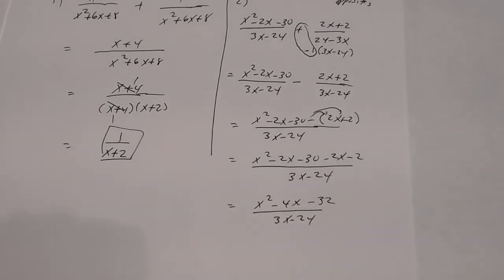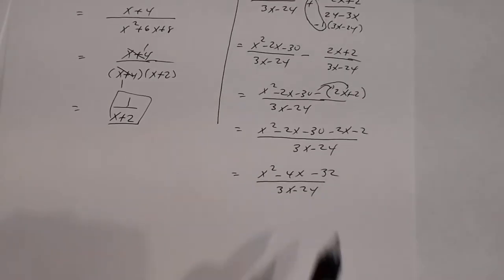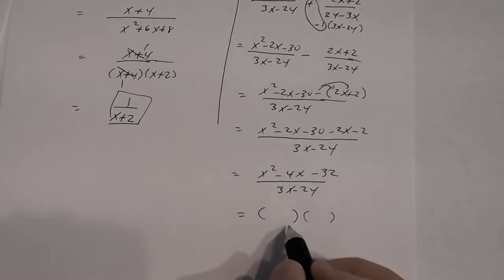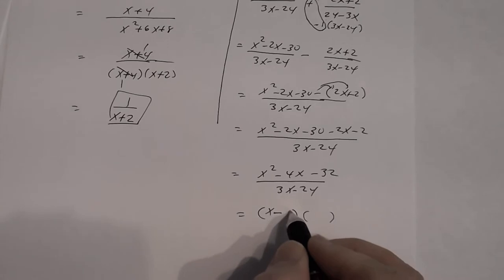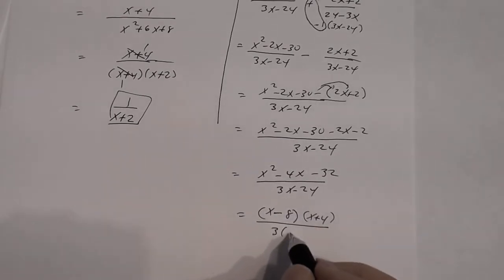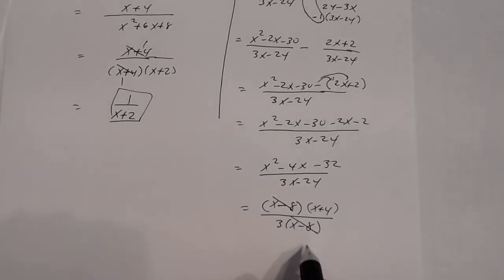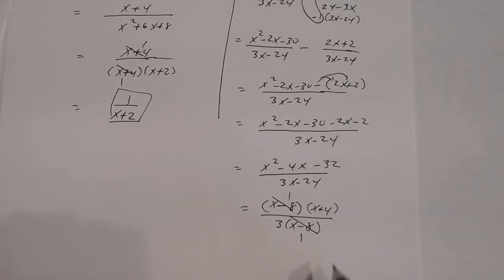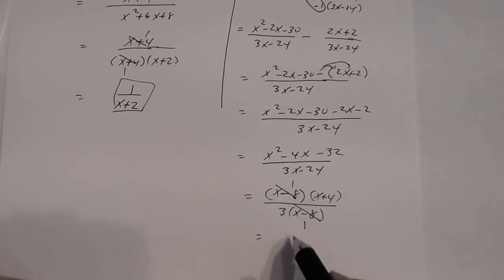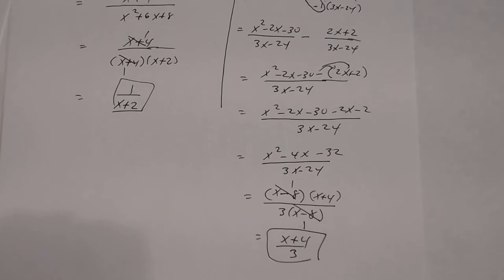Once you get to that point, you have to simplify — factor and then reduce any common factors. In the numerator, I can factor the trinomial as x minus 8 times x plus 4. In the denominator, I can factor out a 3, giving 3 times x minus 8. Now I can reduce the x minus 8 — you must show those factors being reduced, because x minus 8 divided by x minus 8 is 1. So the answer is x plus 4 divided by 3.